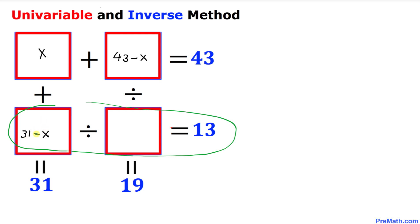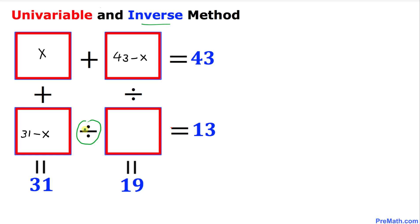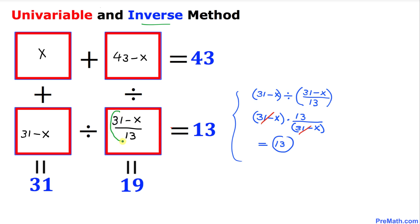Now focusing on this row: we have 31 minus x in one box, and dividing should give 13. Since the inverse of division is multiplication, the other box is (31 minus x) divided by 13. To verify: (31 minus x) divided by [(31 minus x)/13] — we flip and multiply, giving 13 over (31 minus x) times (31 minus x), so the (31 minus x) terms cancel and we get 13.